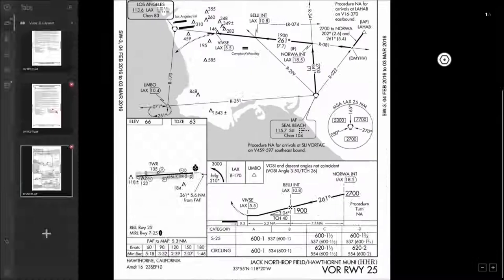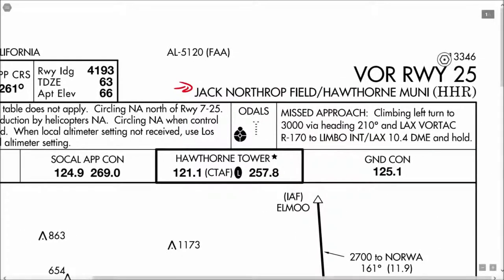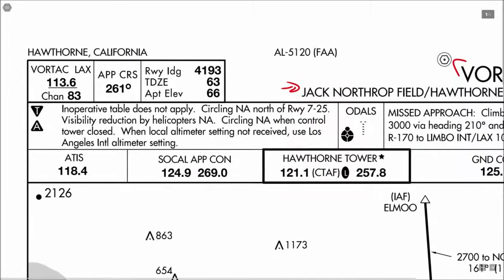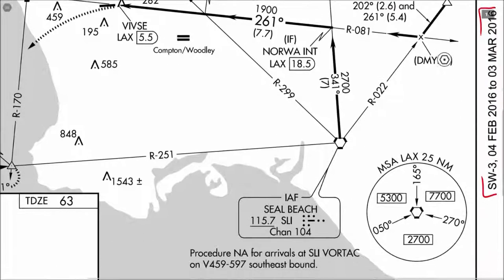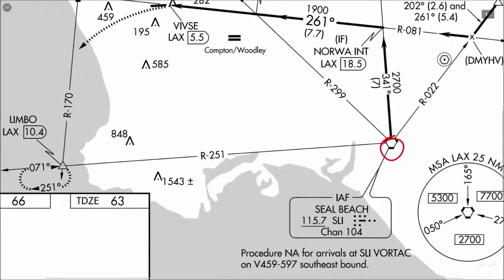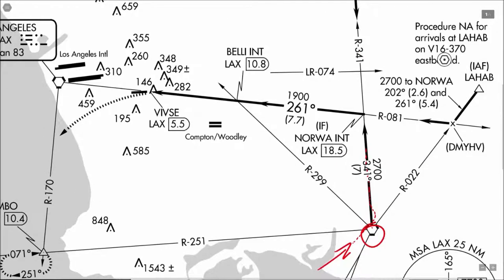Let's take a full look at the VOR approach into Northrop Field, or Hawthorne Municipal. We're doing the VOR Runway 25 into KHHR. You can see we are running current charts from February 4th through March 3rd, 2016. We intercepted, or started our approach from Seal Beach. We came in from Avalon, pretty much from this direction, intercepted Seal Beach, had a little bit of trouble intercepting it, but once we intercepted the course we were fine. We then prepped the outbound course — the outbound radial of 341. Once we got to Seal Beach we took the outbound 341 radial until we intercepted the 261 inbound from Los Angeles, at which point we turned into it.